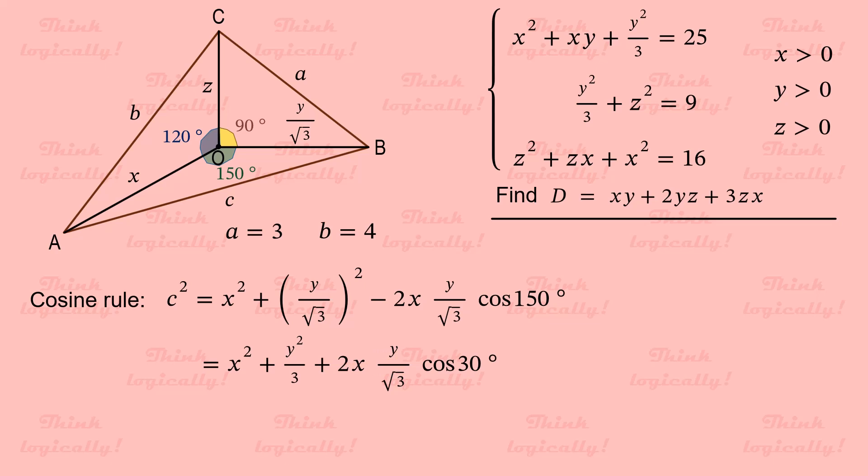Change minus to plus and replace cosine of 150 degrees with cosine of 30 degrees. Cosine of 30 degrees is square root of 3 over 2. You cannot imagine anything better than that. Because the square roots are cancelled out. And 2's are cancelled out as well. So we get a quite cute expression.